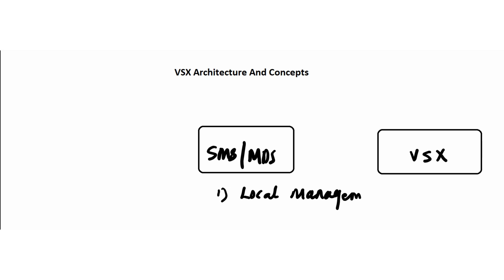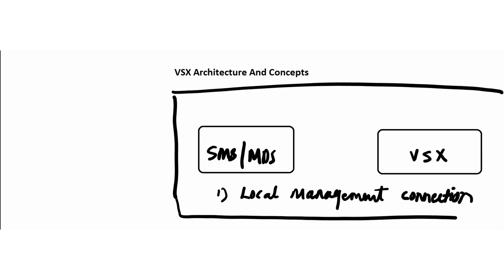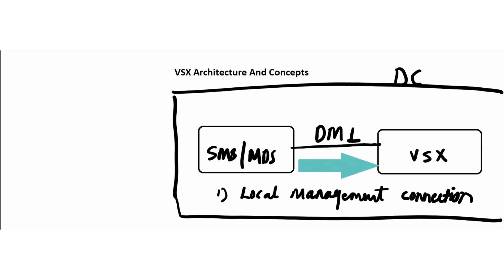With a local management connection, the two devices — appliances or VMs — are within the same geographical location, essentially the same data center. There will be a physical connectivity between the SMS or MDS and the VSX gateway. This connectivity uses a special interface which CheckPoint calls the DMI — dedicated management interface — which is used to connect the VSX gateway to the management server. The DMI is an actual physical interface, or in a VM environment a virtual interface, that is completely assigned to management traffic. There is no issue if the DMI interface has a public or a private IP address.